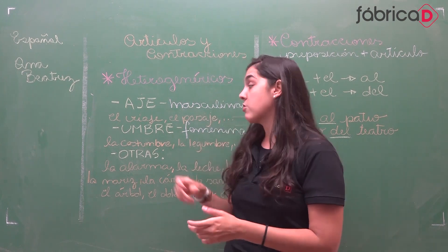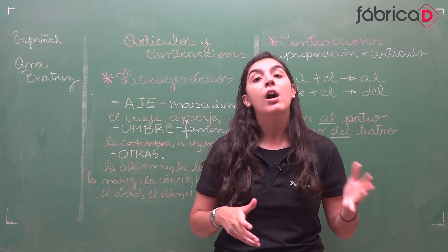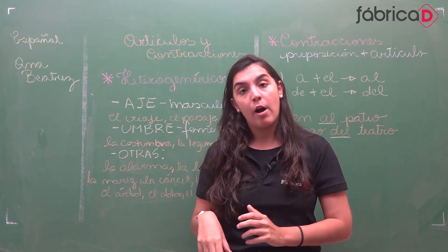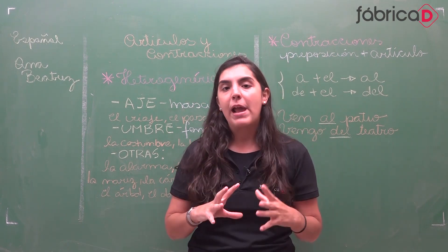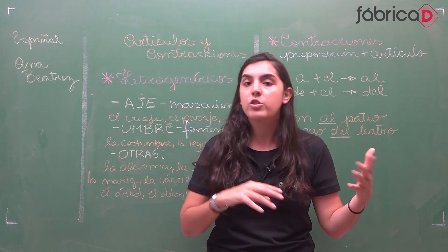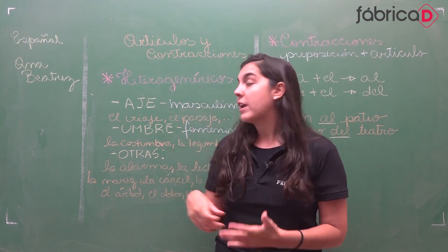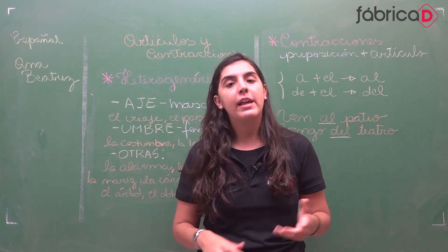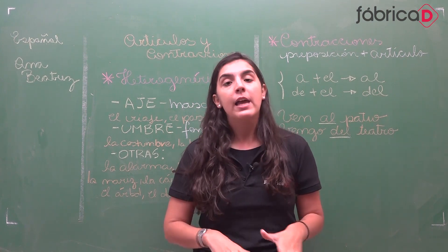Tem que ter atenção às terminações que nos ajudam a reconhecer se é masculina ou feminina. Como aparece em prova? Geralmente vem questão de múltipla escolha para você marcar a opção onde todas são masculinas ou femininas — e aí vem também a ideia de -aje, -umbre, ou aqueles casos de cacofonia que a gente viu, como 'el agua'.